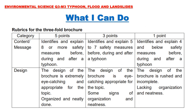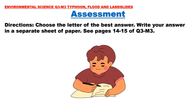Here are the rubrics for the three-fold brochure. You will be graded on content and message, and design. Content and message should identify and explain three or more safety measures before, during, and after a typhoon. The design should be extremely eye-catching, appropriate for the topic, organized, and neatly done. Assessment: Choose the letter of the best answer. Write your answer on your answer sheet. See pages 14 to 15 of Quarter 3, Module 3.